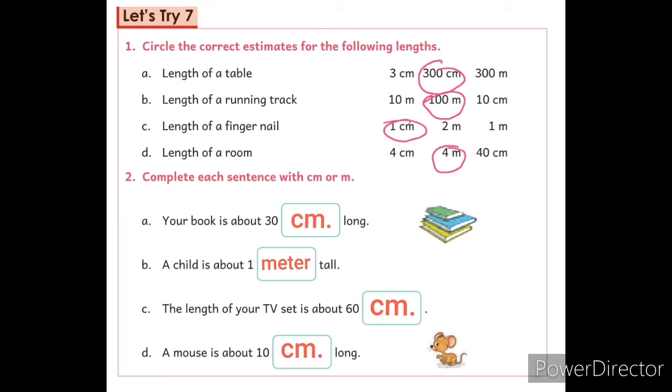The length of the correct estimate for the circle is given. Question number 1, part A: Length of a table. The answer is 300 cm. So, circle it.